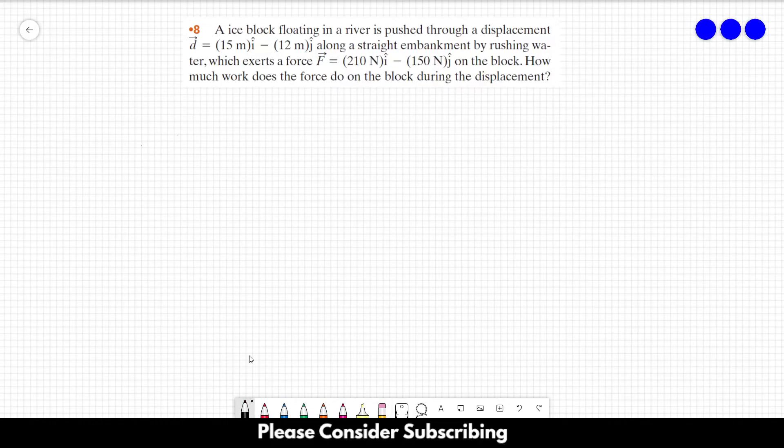Number 8. An ice block floating in a river is pushed through a displacement D equals 15 meters in the i-direction minus 12 meters in the j-direction along a straight embankment by rushing water, which exerts a force equal to 210 N in the i-direction minus 150 N in the j-direction on the block. How much work does the force do on the block during the displacement?